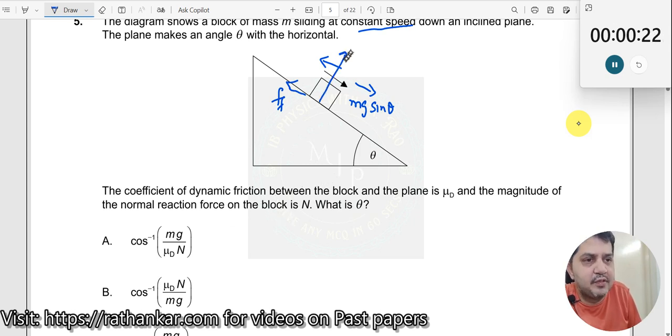Now what is theta? He is asking you to find out the value of theta. So how do you write? Since it is moving at uniform speed, you can now write frictional force is equal to mg sine theta. First equation.